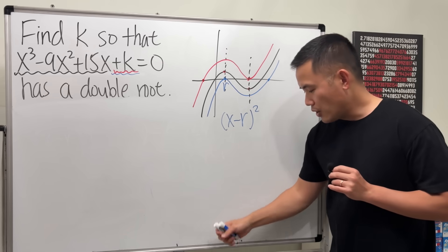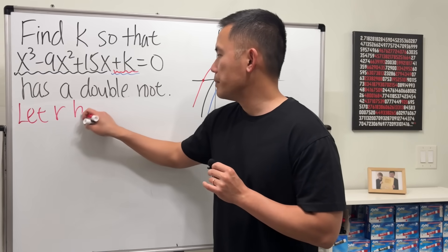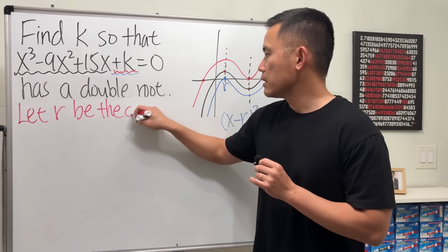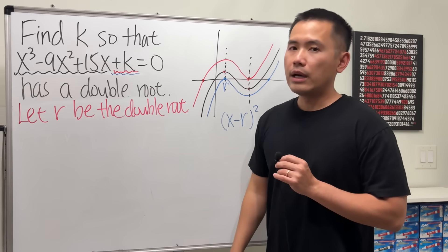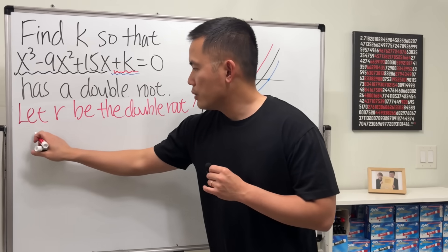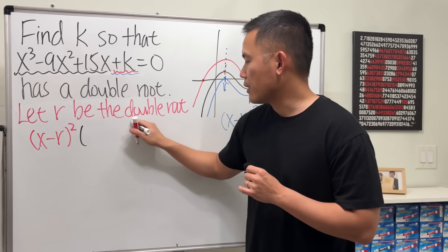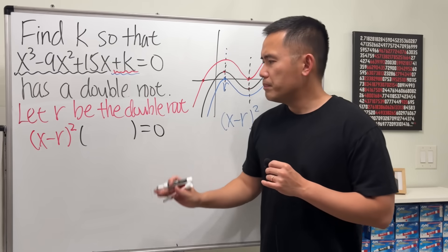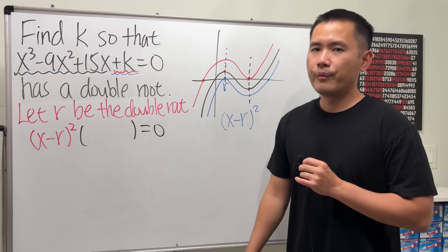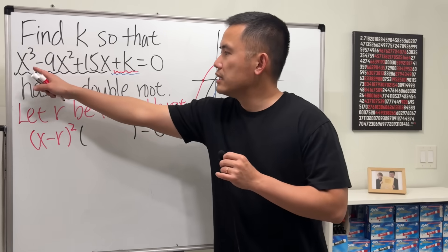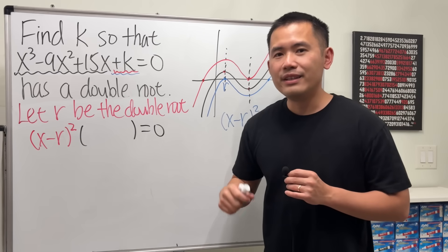But how do we achieve this though? Let's take a look at the blue one, for example. Let's say r is the double root. The idea is, if you do this algebraically, if you factor it, you must have to factor (x - r)² times something else which I don't know what it is yet. That's the key.